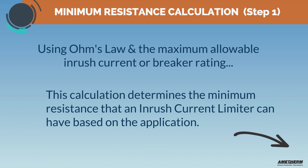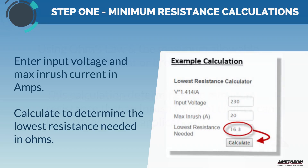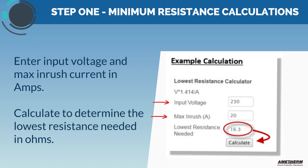Step 1: Calculating the minimum resistance. Using Ohm's law and the maximum allowable inrush current or breaker rating, this calculation determines the minimum resistance that an inrush current limiter can have based on the application. Enter the input voltage and the max inrush current in amps, then calculate to determine the minimum resistance. In this scenario, it is 7.2 ohms.